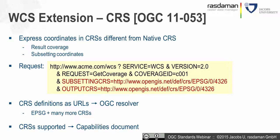Supported CRSs are listed in the capabilities document. These CRS definitions appear as URLs — OGC policy — and OGC operates a resolver so that typing the URL into a browser returns a document containing the CRS definition. It is machine-readable as well.